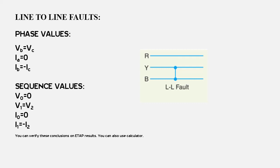The current in the unfaulted path, phase A, will be almost equal to zero. If we talk about sequence component values, since it is a line to line fault with no ground, zero sequence current needs a ground to flow. Since there is no ground, the zero sequence voltage component and zero sequence current component will be zero. Positive and negative sequence components of voltages will be equal, while positive and negative sequence currents will be equal in magnitude and opposite in phase — their vector sum equals zero.